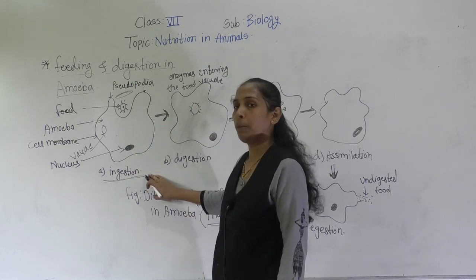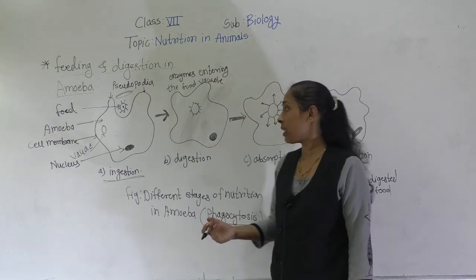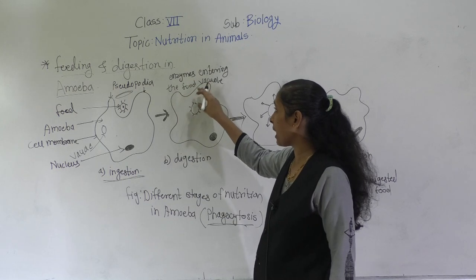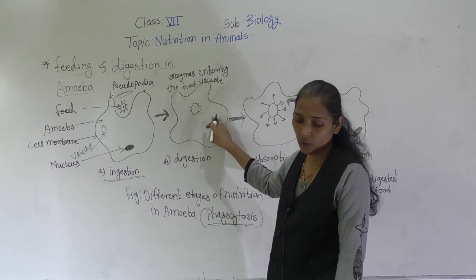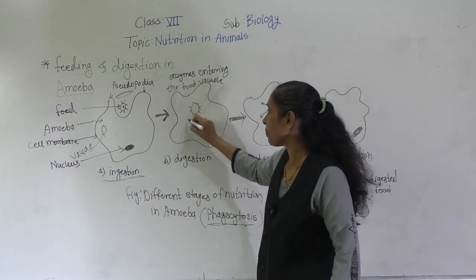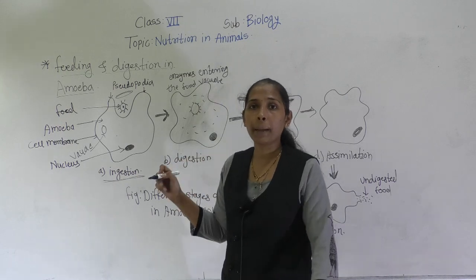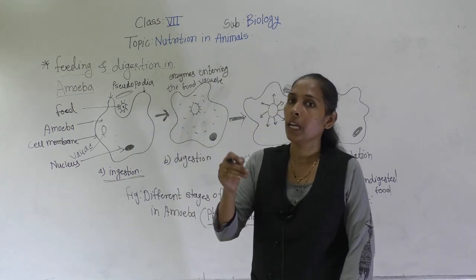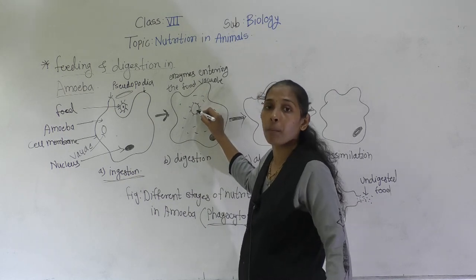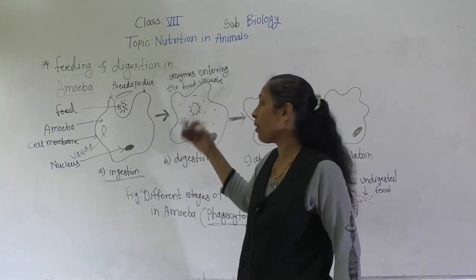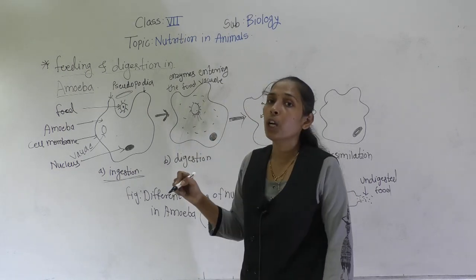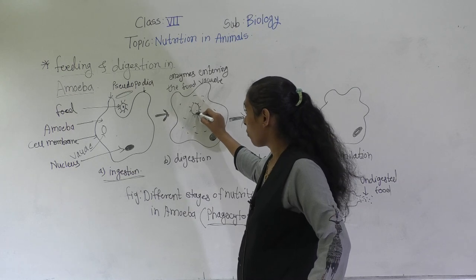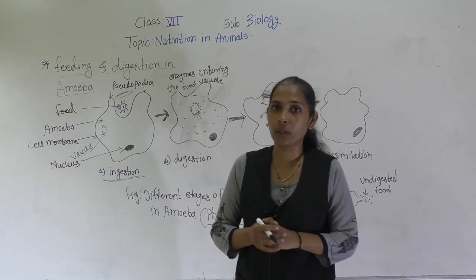This is the ingestion process. After ingestion comes digestion. Once the food enters into the body of the amoeba, enzymes from the surrounding cytoplasm start to enter into the food vacuole. The cytoplasm is the jelly-like substance present in the cell, and the enzymes from it enter the food vacuole and start to digest the food.